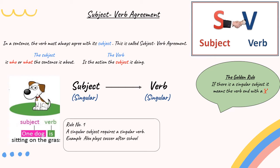Sitting is the action the subject is doing. Let us take a look at the golden rule. If there is a singular subject, it means the verb ends with an S. If the subject is singular, then the verb is singular.